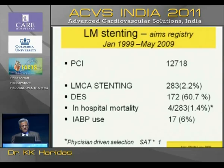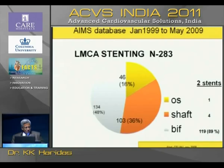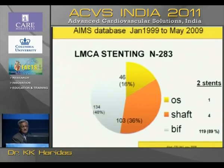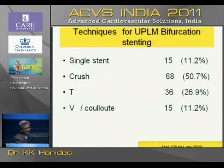This is the registry. I'm not going into the details for sake of time because we are already late. If you look at the majority of lesions of the left main, this is operator-driven, and we were doing mainly ostium and shafts in the yesteryears. We now do more distal left mains — almost two-thirds of left main stenting cases are done at the bifurcations rather than the ostium or shaft.